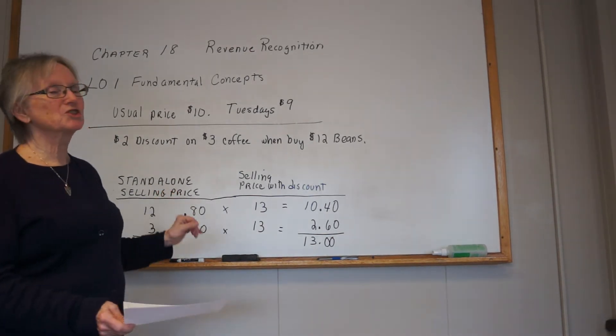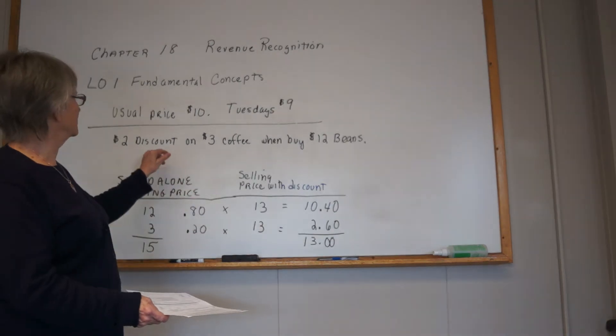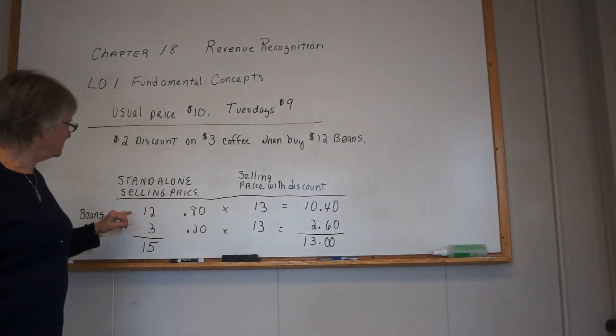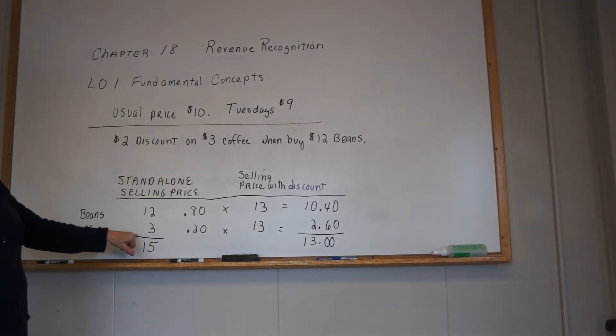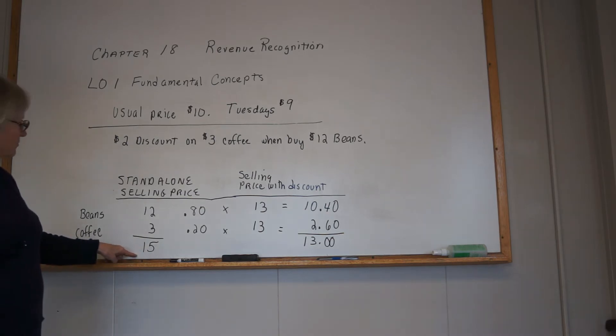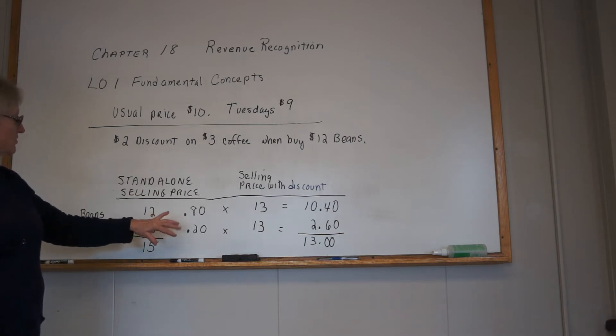The standalone selling price of the coffee and the beans: the beans ordinarily cost $12, the coffee costs $3. So the standalone price - what you'd sell each of them separately for - would be $15. You get the percentages involved: you do 12 divided by 15, so the beans make up 80% of that.